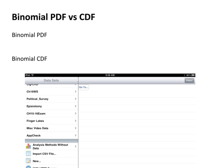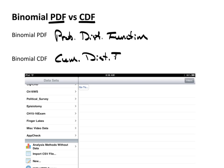Now, when we're talking about the binomial distribution, we typically talk about the binomial PDF, which is the probability distribution function, or the CDF, which is the cumulative distribution function.